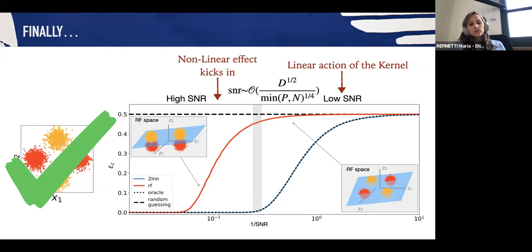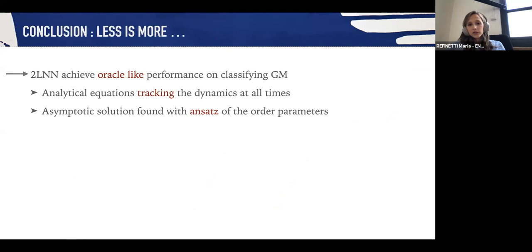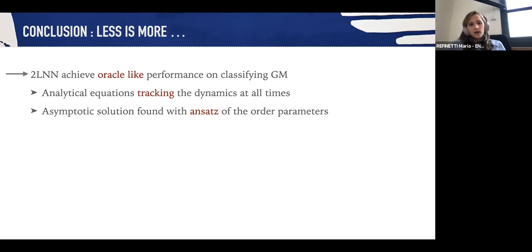Just to conclude, what we've seen is that two-layer neural networks can achieve optimal oracle-like performances in classifying Gaussian mixtures with almost all values of the signal-to-noise ratio. We found analytical equations that are able to track the dynamics of training at all times, and by making an ansatz on the order parameters, we can actually assess efficiently the long-time performances.